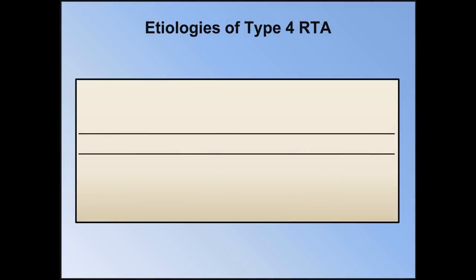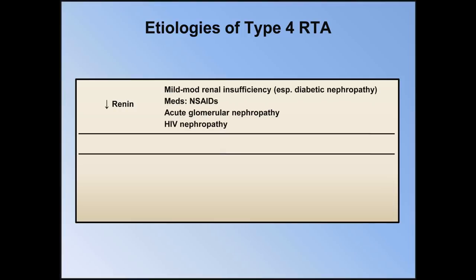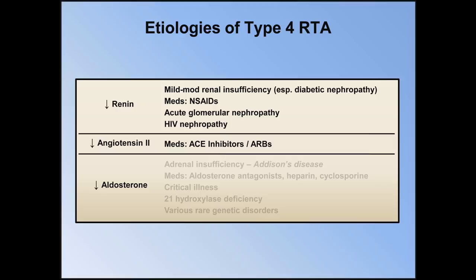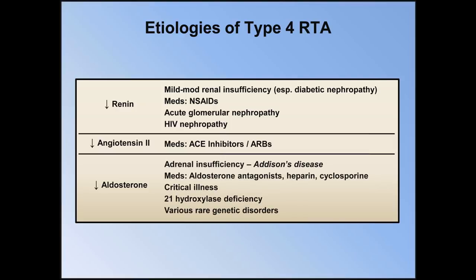Here is a list of the etiologies of type 4 RTA. Pathologies that specifically lead to low renin levels include mild to moderate renal insufficiency, especially diabetic nephropathy, NSAIDs, acute glomerular nephropathy, and HIV nephropathy. Pathologies that lead to low angiotensin-2 levels only include ACE inhibitors and ARBs. Finally, a more direct problem with low aldosterone can be due to Addison's disease, medications such as aldosterone antagonists, heparin, and cyclosporine. In critical illness, high circulating levels of ACTH may shunt steroid precursors towards cortisol and away from aldosterone. Patients with 21-hydroxylase deficiency form of congenital adrenal hyperplasia also have low aldosterone levels, as do a variety of other rare genetic disorders.